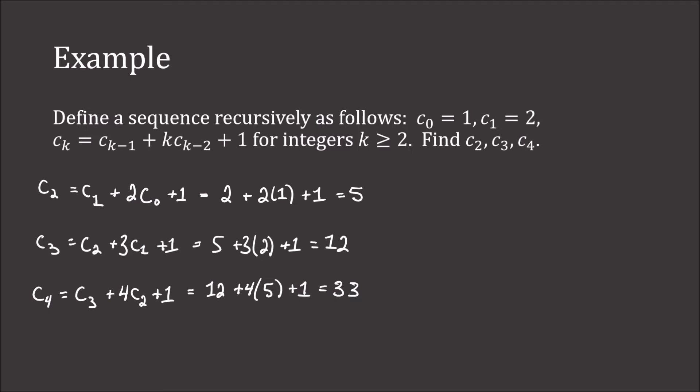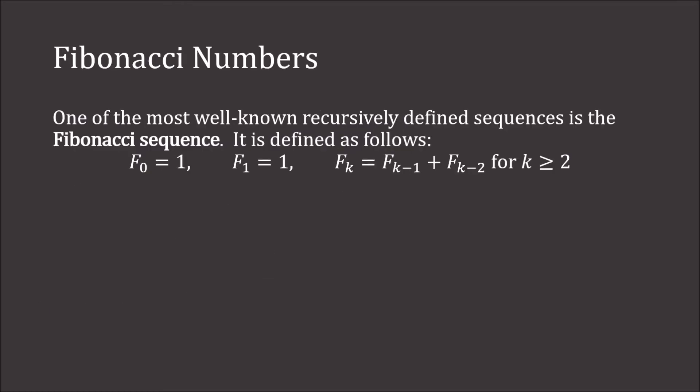Now one of the most well-known recursively defined sequences is the Fibonacci sequence. It is defined as follows: f sub 0 is 1, f sub 1 is 1, and f sub k equals f sub k minus 1 plus f sub k minus 2 for k greater than or equal to 2. So the first two terms are 1 and 1, and each subsequent term is the sum of the previous two.